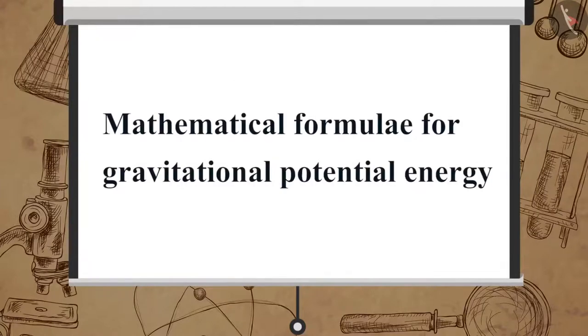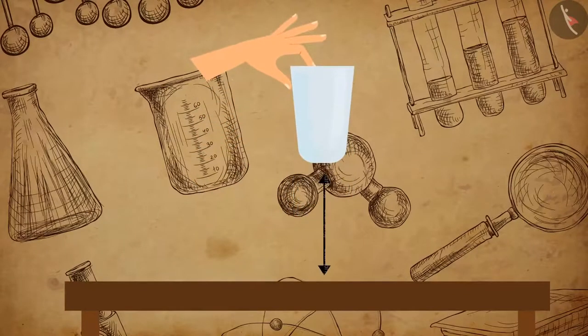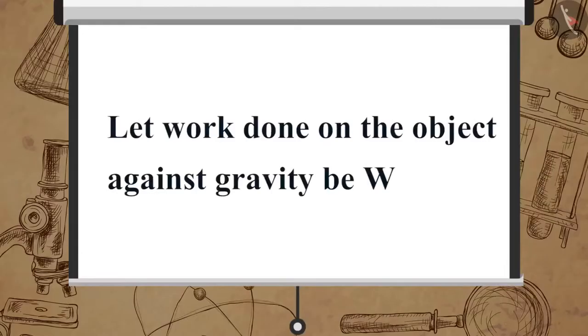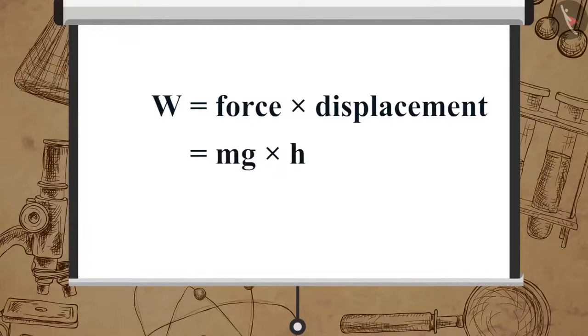Now, let us derive the mathematical formulae for gravitational potential energy. Suppose an object with mass M is raised from the ground through a certain height H. The force required to raise the object is equal to the weight of the object, i.e., Mg. The energy gained by the object is the work done on it. Let work done on the object against gravity be W. W is equal to force multiplied by displacement, which is equal to Mg multiplied by H, which is equal to Mgh.